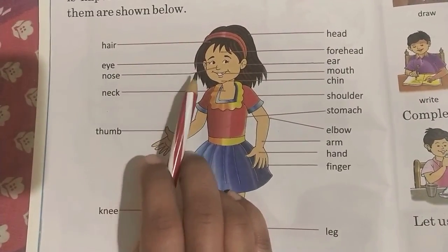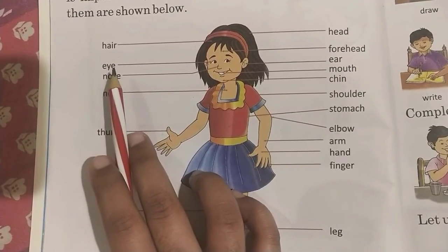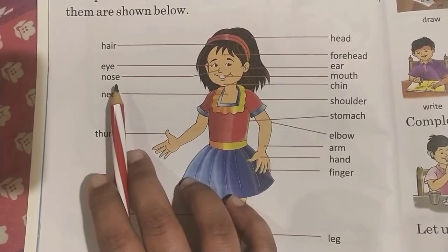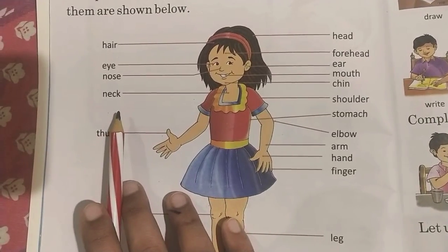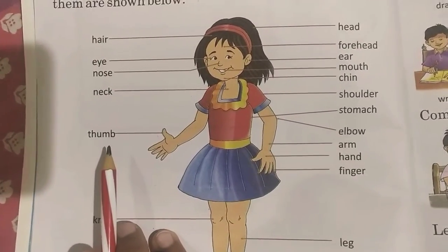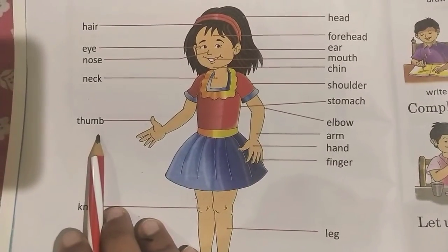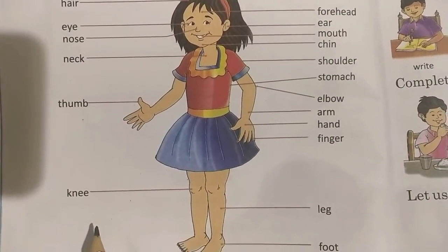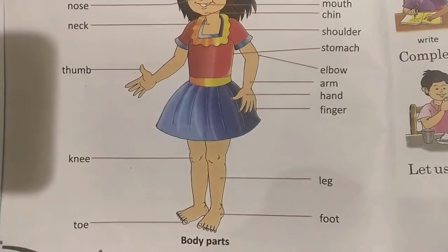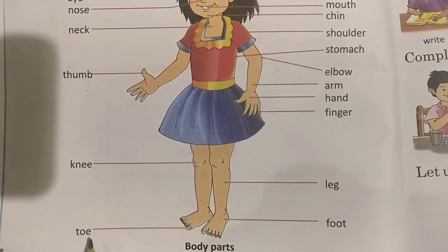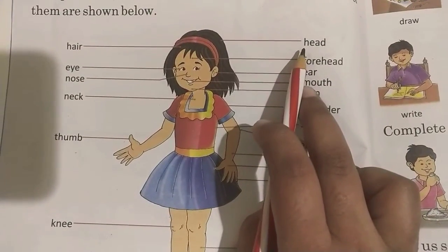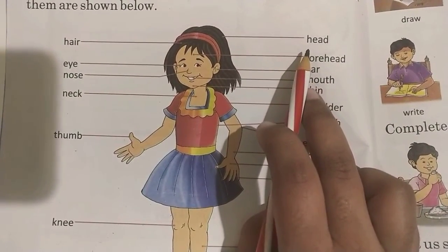Eyes — this is your eyes. Next: nose. Nose. Next: neck. Next: thumb. Next: knee. Next: toe. Next: head.